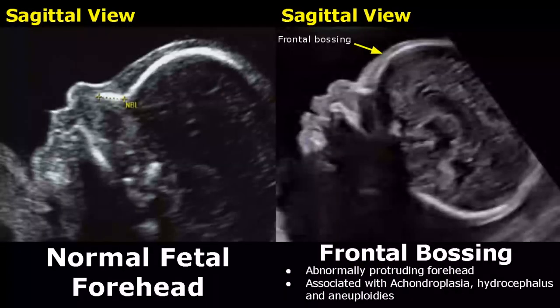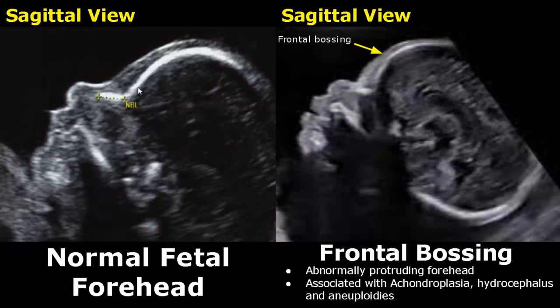This is a sagittal view showing a normal fetal forehead. And over here is a case of frontal bossing, in which there is an abnormally protruding forehead — you can see an increased convex curvature of the forehead. It is usually associated with achondroplasia, hydrocephalus, and aneuploidies.